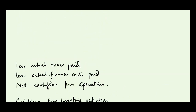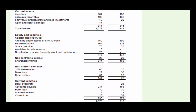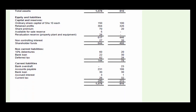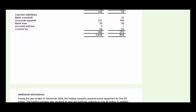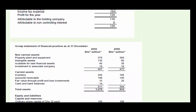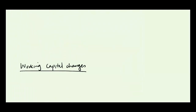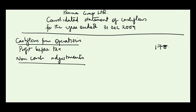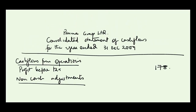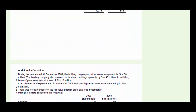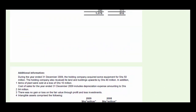Having done that, we start with the easiest marks. The easiest marks have to start with the PBT — profit before tax — which is 178. We post that figure. After that, we look at the cash and cash equivalents at the start and at the end.